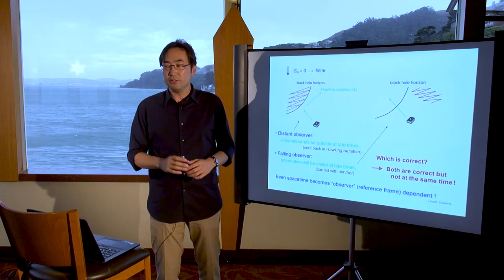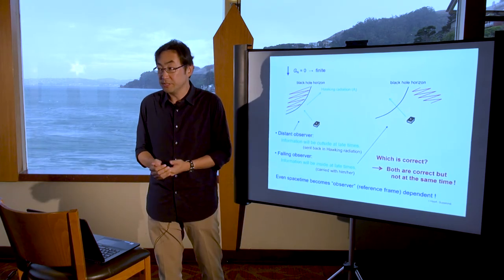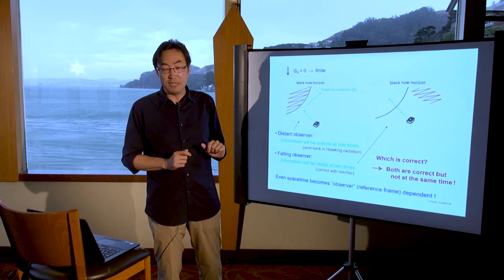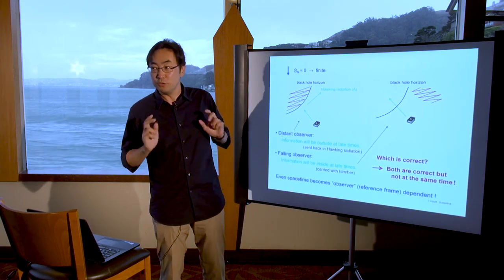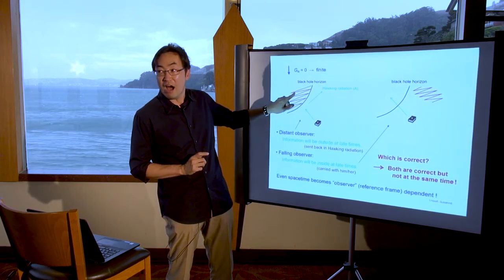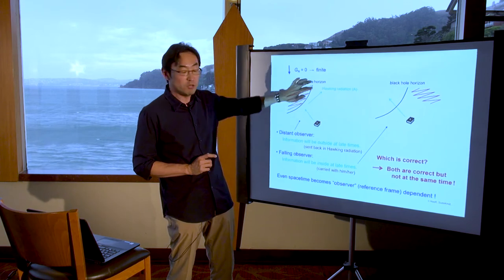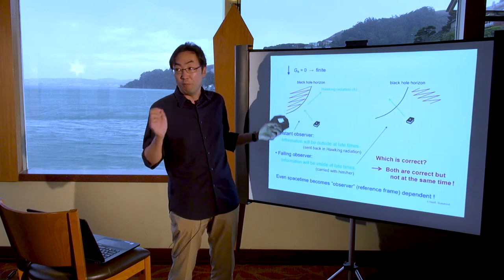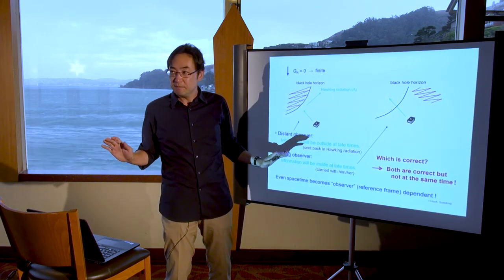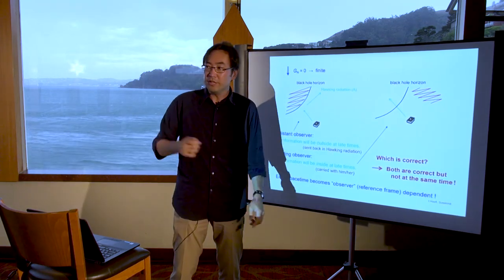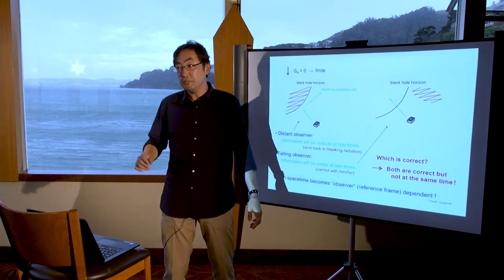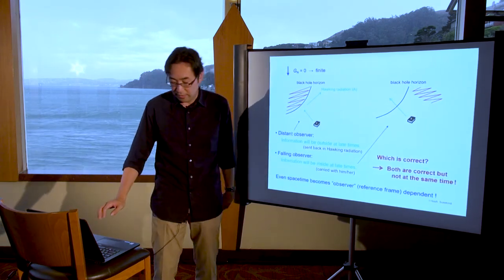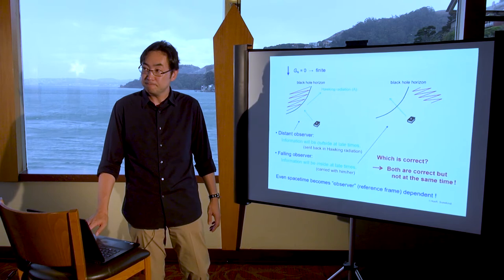So the point is that you cannot both be distant observer and falling observer at the same time. It's either or. So if you describe in either way, then the description of physics looks quite different. And what you learn here is that even the concept of spacetime may be observer or reference frame dependent. Because if you choose distant reference frame, you should regard inside of the black hole as non-existent. Because otherwise, information is copied. You have information in radiation, and the book will be inside, copies. No. Interior does not exist. And if you're falling into the black hole, then you should regard that part of the outside spacetime does not exist.